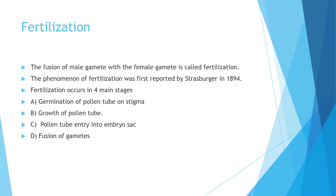The female reproductive part of the flower is the gynoecium. The individual unit of the gynoecium is the carpel, and each carpel consists of three parts: ovary, style, and stigma. Inside the ovary there are ovary bodies called ovules, and these ovules contain the embryo sac or the female gametophyte.